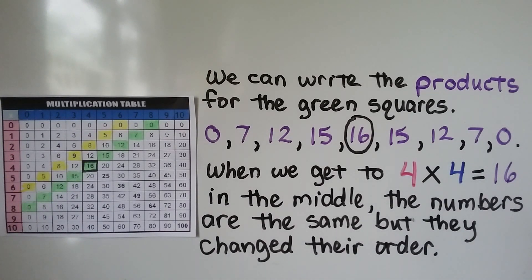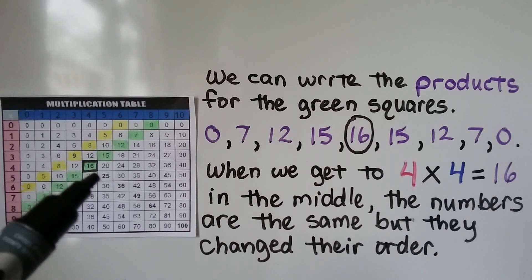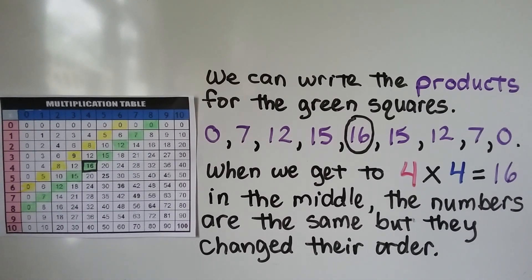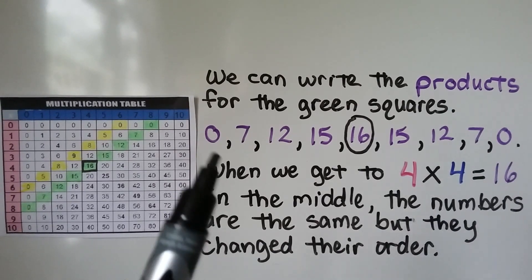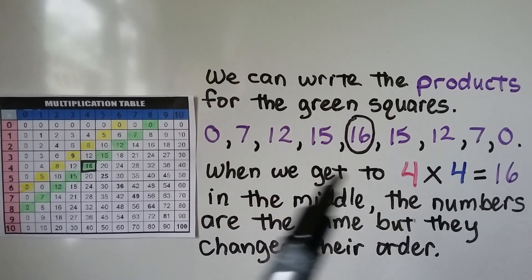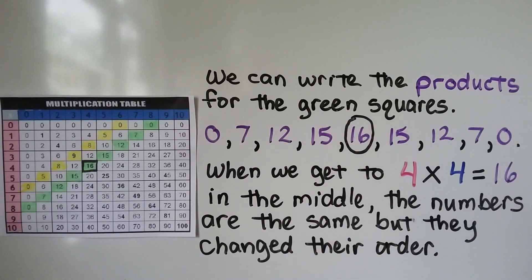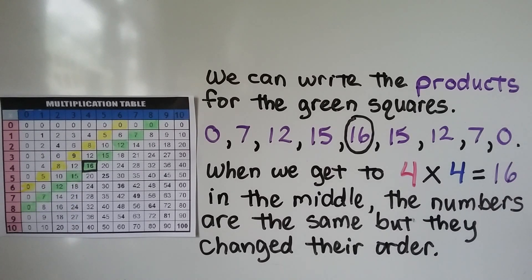We can write the products for the green squares. We have 0, 7, 12, 15, 16, 15, 12, 7, 0. Do you see the pattern? There's a 0 on each end, then a 7, then a 12, then on each side of the 16 there's a 15. When we get to 4 times 4 equals 16 in the middle, the numbers are the same but they change their order.